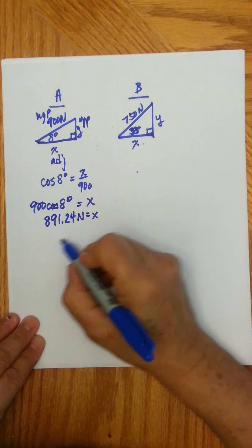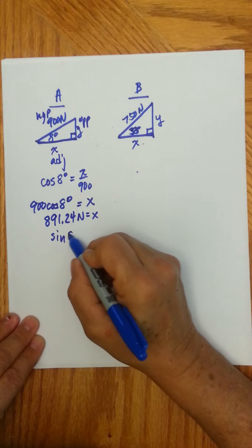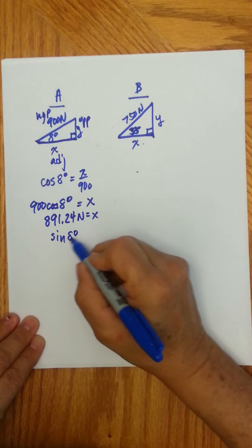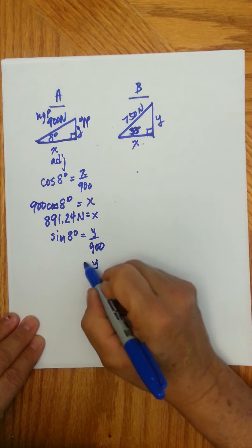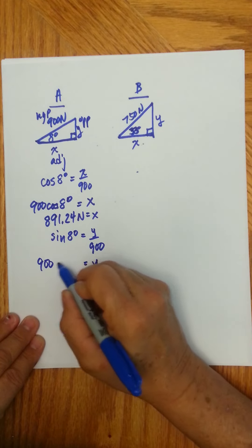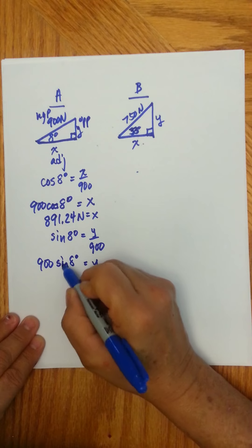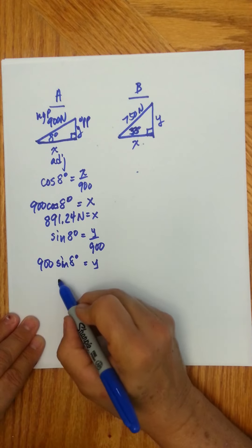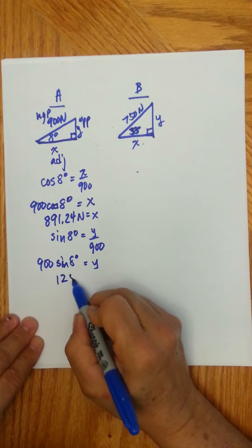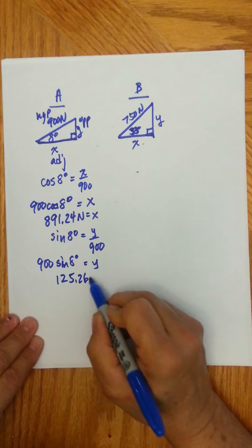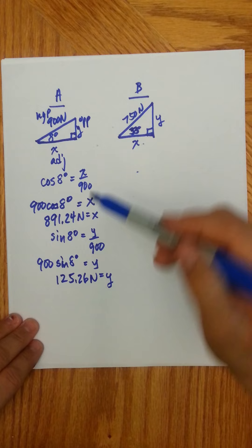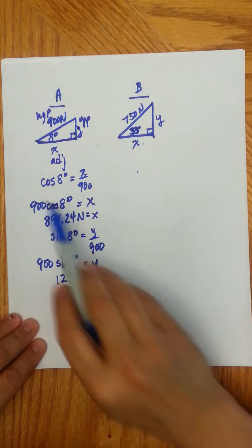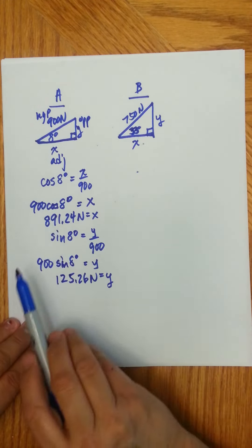We can do the same thing for y. We have sine of 8 degrees equal to y over 900, so y will be 900 sine of 8 degrees, and we get 125.26 newtons for y. Be careful to make sure that you're in degree mode. So we've resolved this vector 900 into its components.